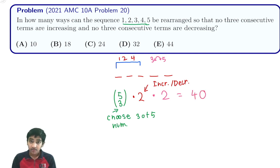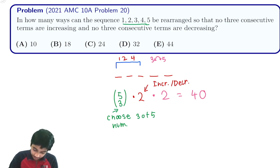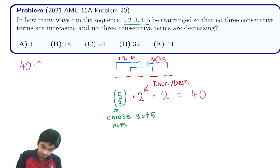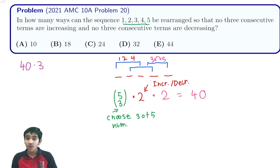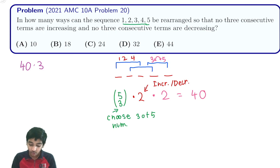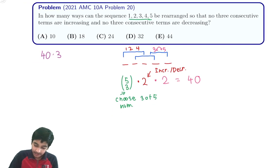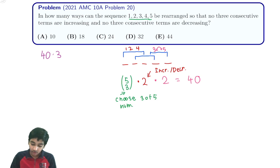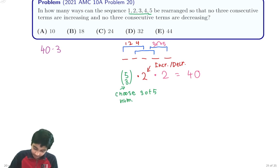But remember, the three consecutively increasing or decreasing terms don't have to be the first three terms — they can be terms 1–3, terms 2–4, or terms 3–5. So we're really dealing with 40 × 3 = 120. But by the Principle of Inclusion and Exclusion, we must subtract the overlap between different pairs of these three sets.